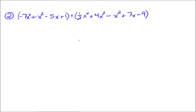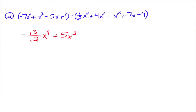Negative 14 halves plus 1 half would be negative 13 halves x to the fourth. Make sure you understand where that negative 13 halves is coming from — remember, you have to get a common denominator when you add fractions. Then we've got plus x cubed plus 4x cubed, which is plus 5x cubed. And we have an x squared over here, but we do have a negative x squared on the right, so negative x squared. Then negative 5x plus positive 7x goes to plus 2x. And positive 1 plus negative 9 goes to negative 8.